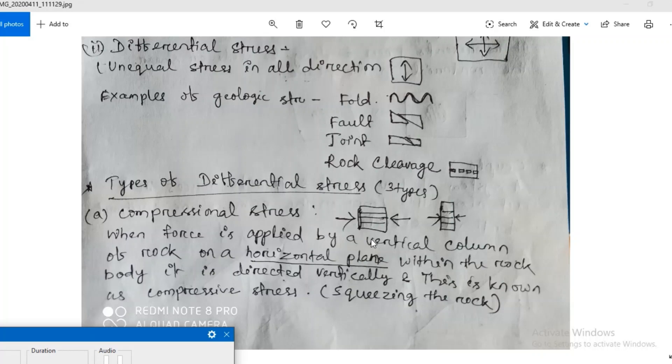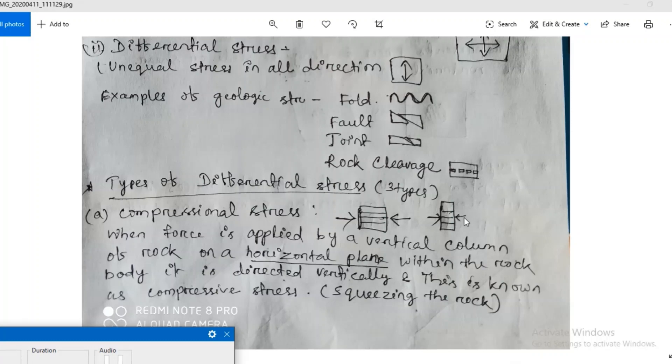First is compressional or compressive stress. When force is applied by a vertical column of rock on a horizontal plane within the rock body, it is directed vertically. This is known as compressive stress and this stress squeezes the rock body.